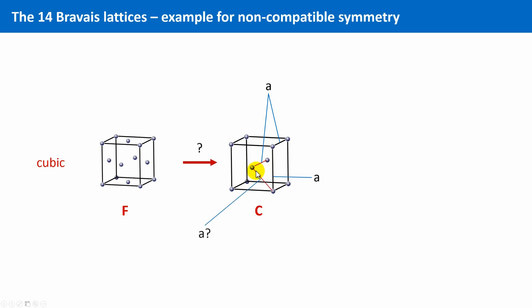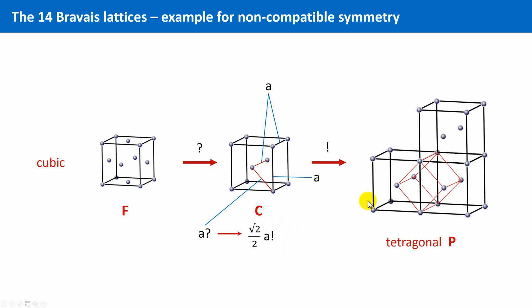But what about this length? It is not A. Instead, it is the square root of 2 divided by 2 times A, and this can be derived by the theorem of Pythagoras. So it turns out that this C-centered cell is not compatible with the cubic system. In fact, it is a primitive tetragonal cell, shown here in red.